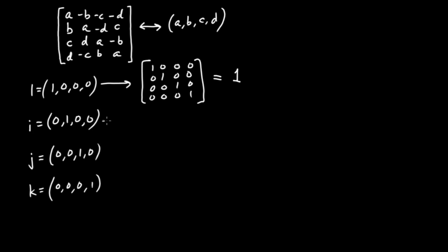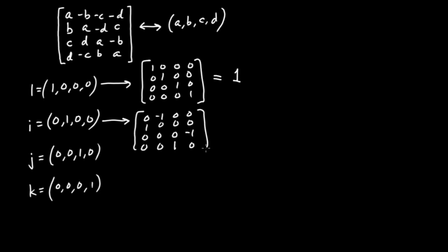So that's a neat observation: the quaternionic multiplicative identity, when translated into the land of 4x4 matrices, is the identity matrix. Now let me write out the i matrix. B is going to be equal to 1. B is present in four places, so following the template it's going to be: 0, minus 1, 0, 0 / 1, 0, 0, 0 / 0, 0, 0, minus 1 / 0, 0, 1, 0. And that's the matrix version of the quaternionic i.